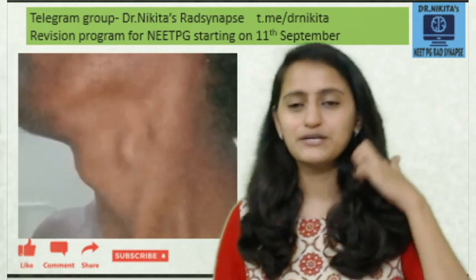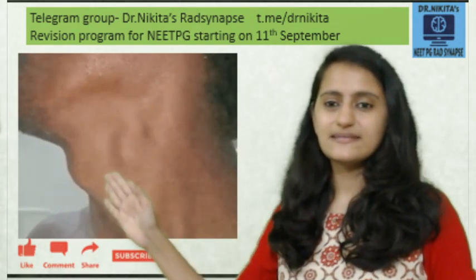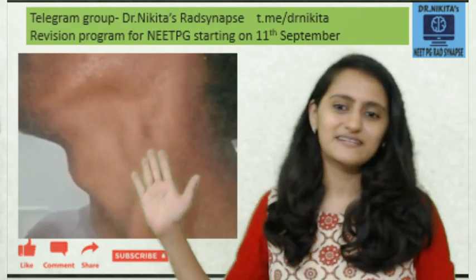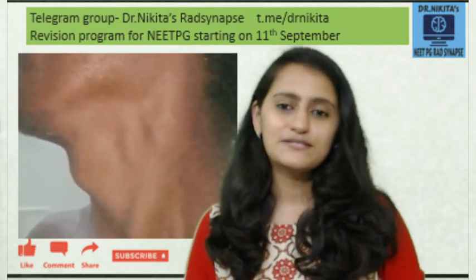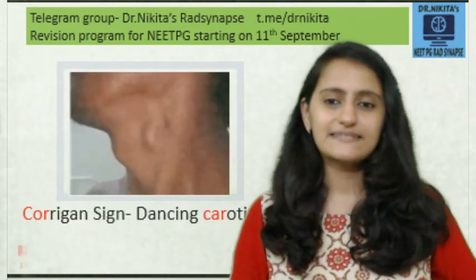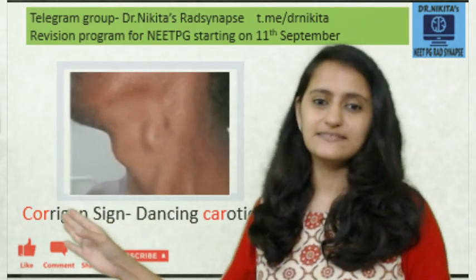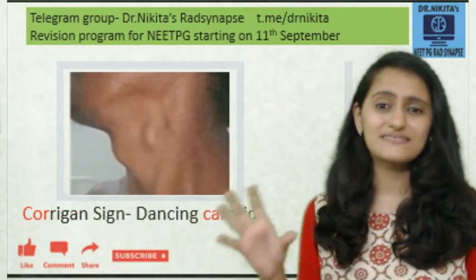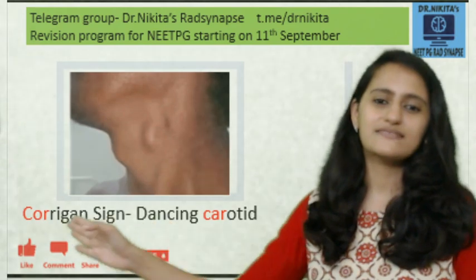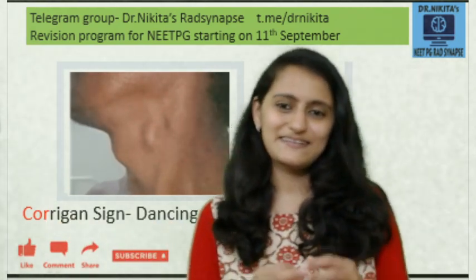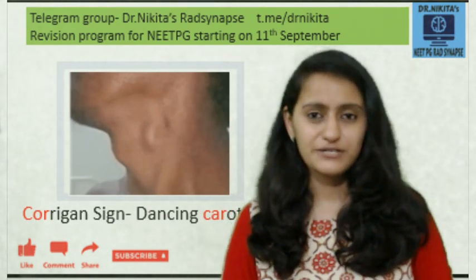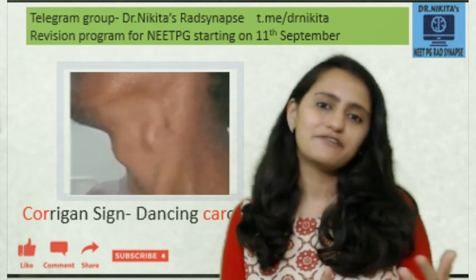The first sign: here we see the carotid artery showing a bounding pulse — the dancing carotid. This is called Corrigan's sign. To remember this, it's very easy: Corrigan's and carotid — look at the spelling, they are so similar. So the first cheat code: Corrigan's sign is the dancing carotid. We can also see these bounding pulses in the peripheral pulses, which is called the water hammer pulse.